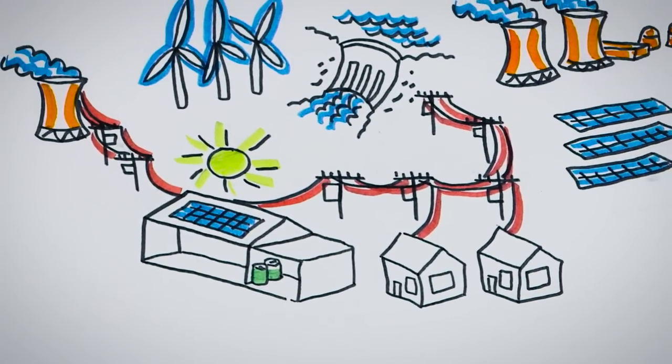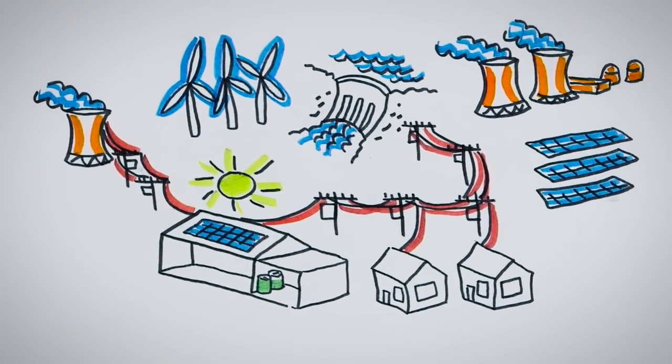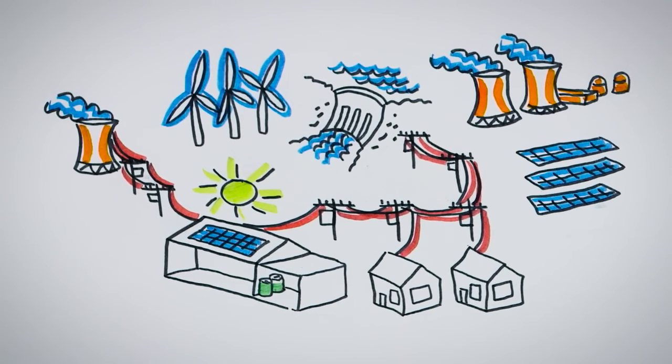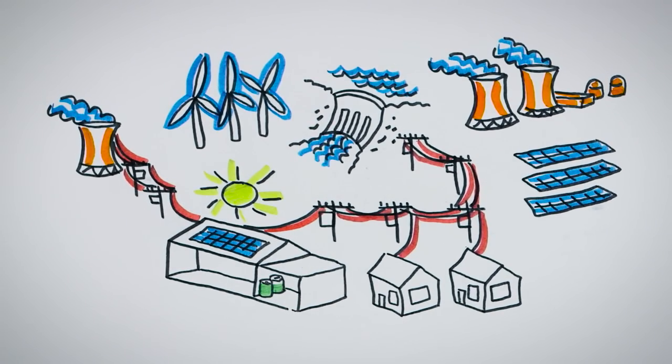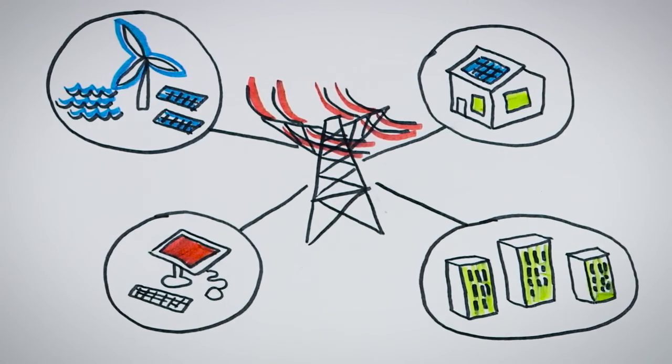Yes, rooftop solar and battery storage can work in isolation, but when they're connected through the grid, they provide a more reliable, stable, and affordable source of electricity. These energy resources work best together, enhancing a powerful, precision-engineered power system.